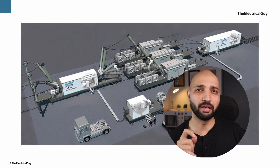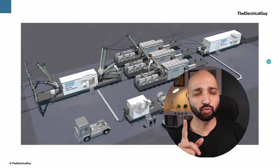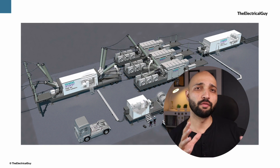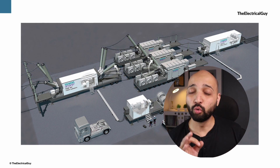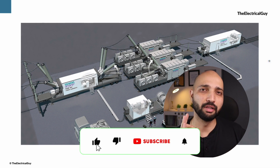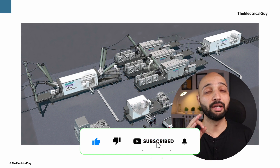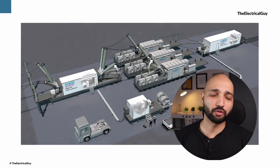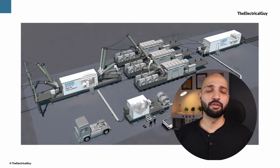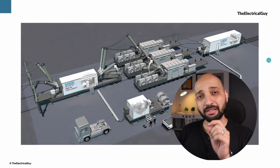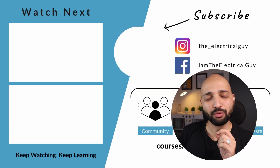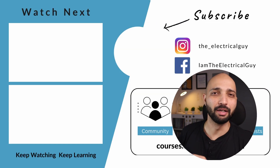All utilities will try hard so that their substations don't go off, but some situations are beyond their control — like floods, earthquakes, or lightning strikes — and in those cases such mobile substation arrangements are very useful to maintain supply continuity. Do check out my website courses.theelectricalguide.in for electrical engineering courses. If you found the video helpful, please like and share it. That's all for this video — keep watching and keep learning.